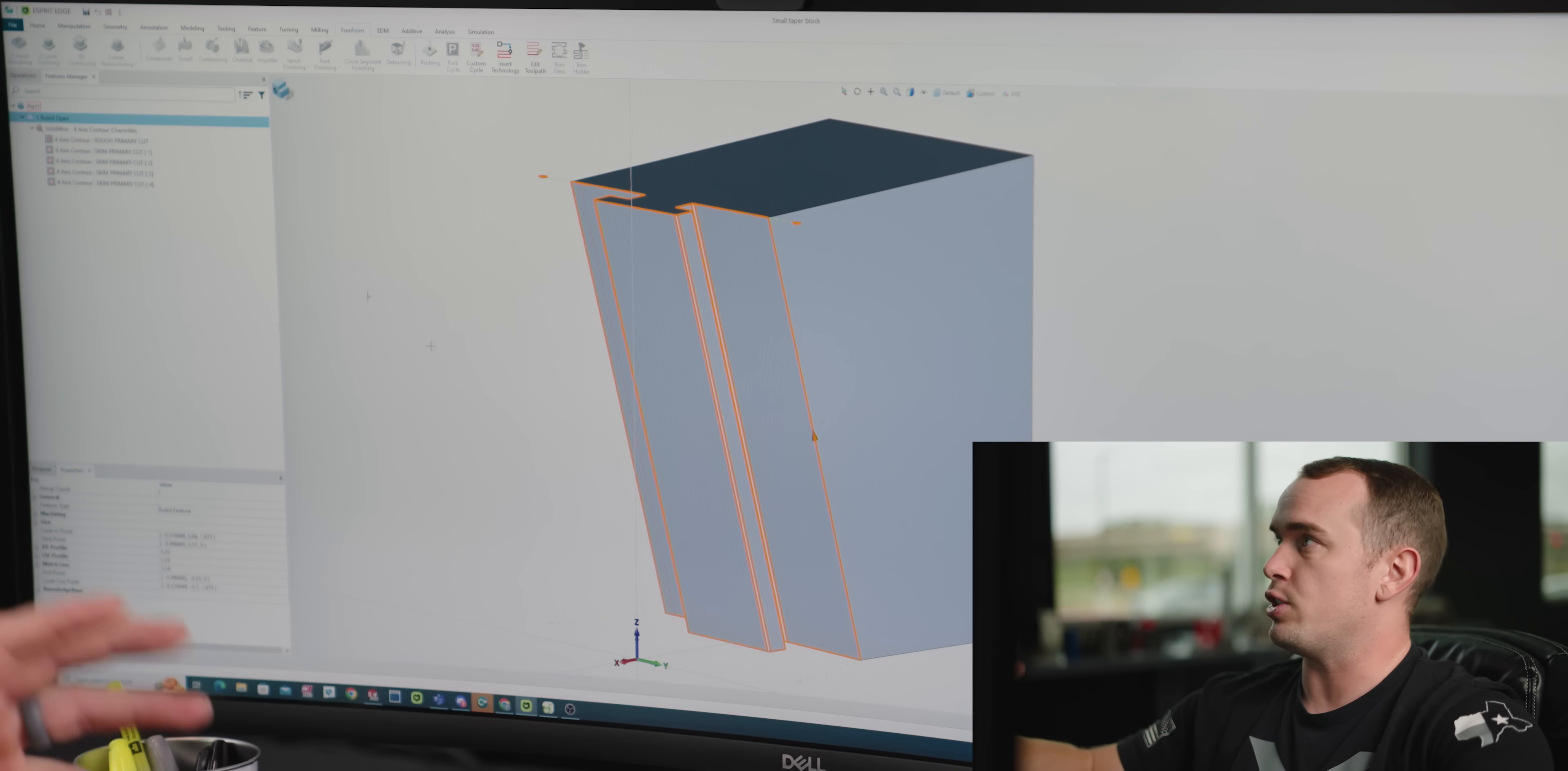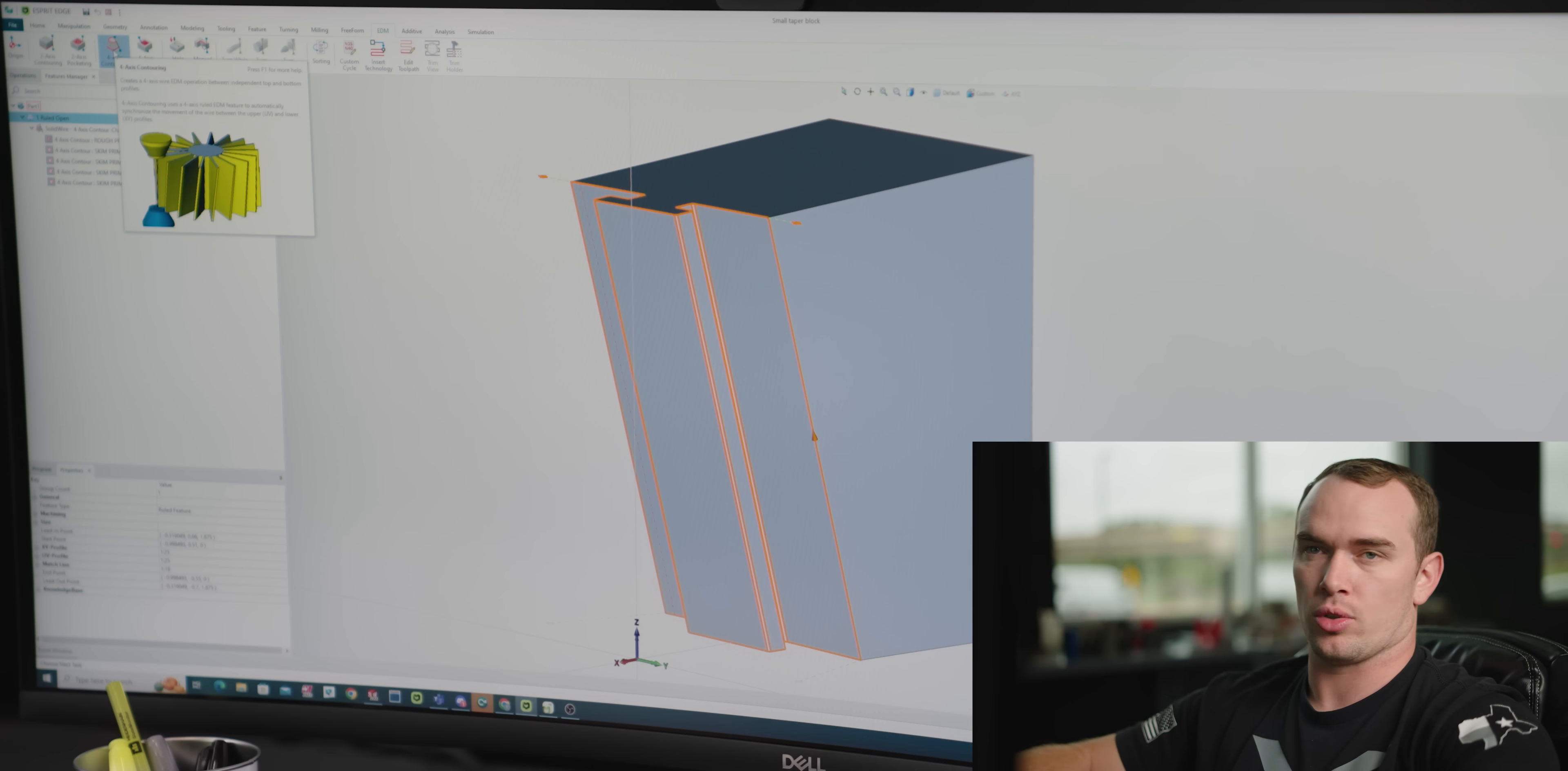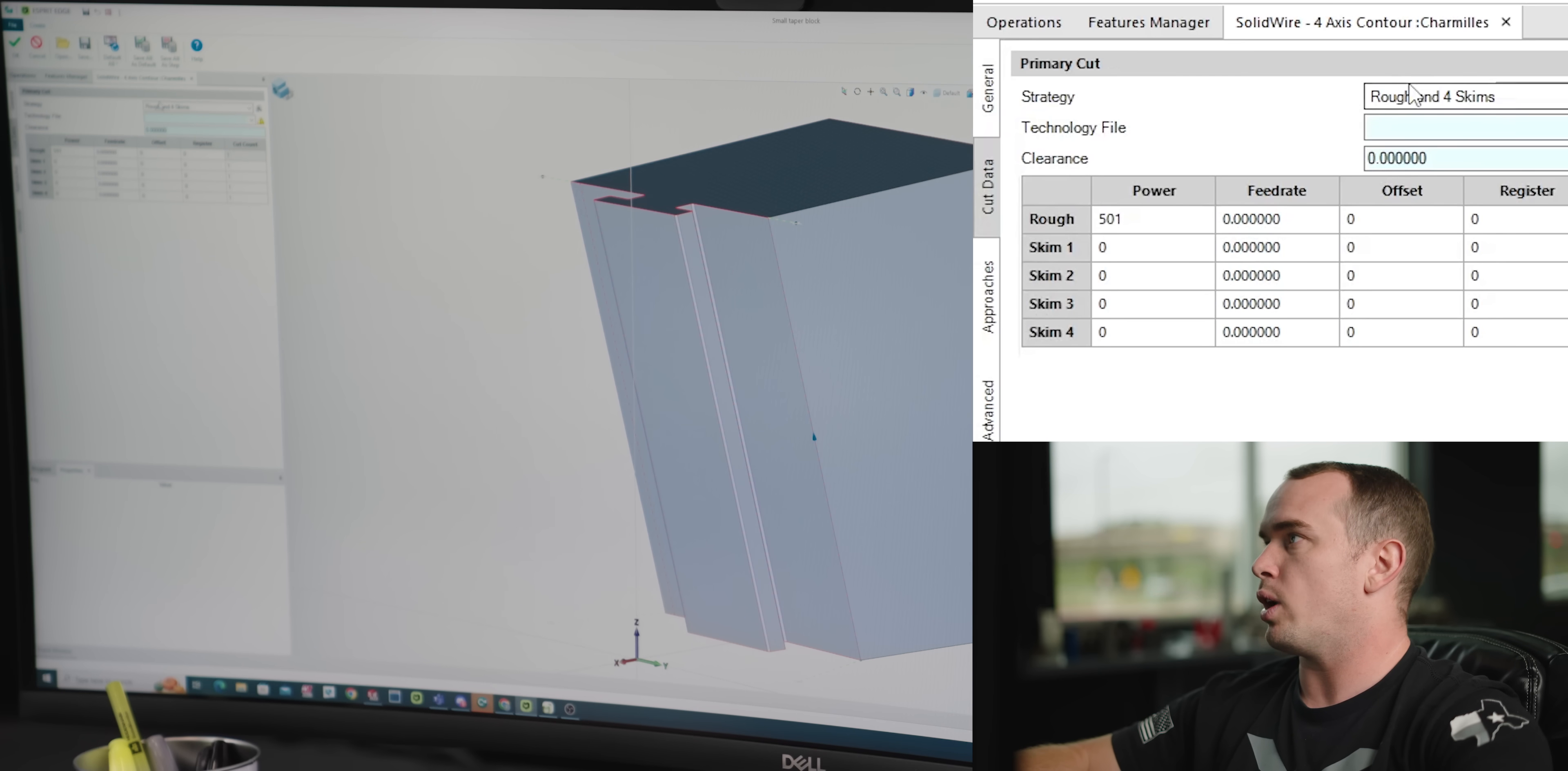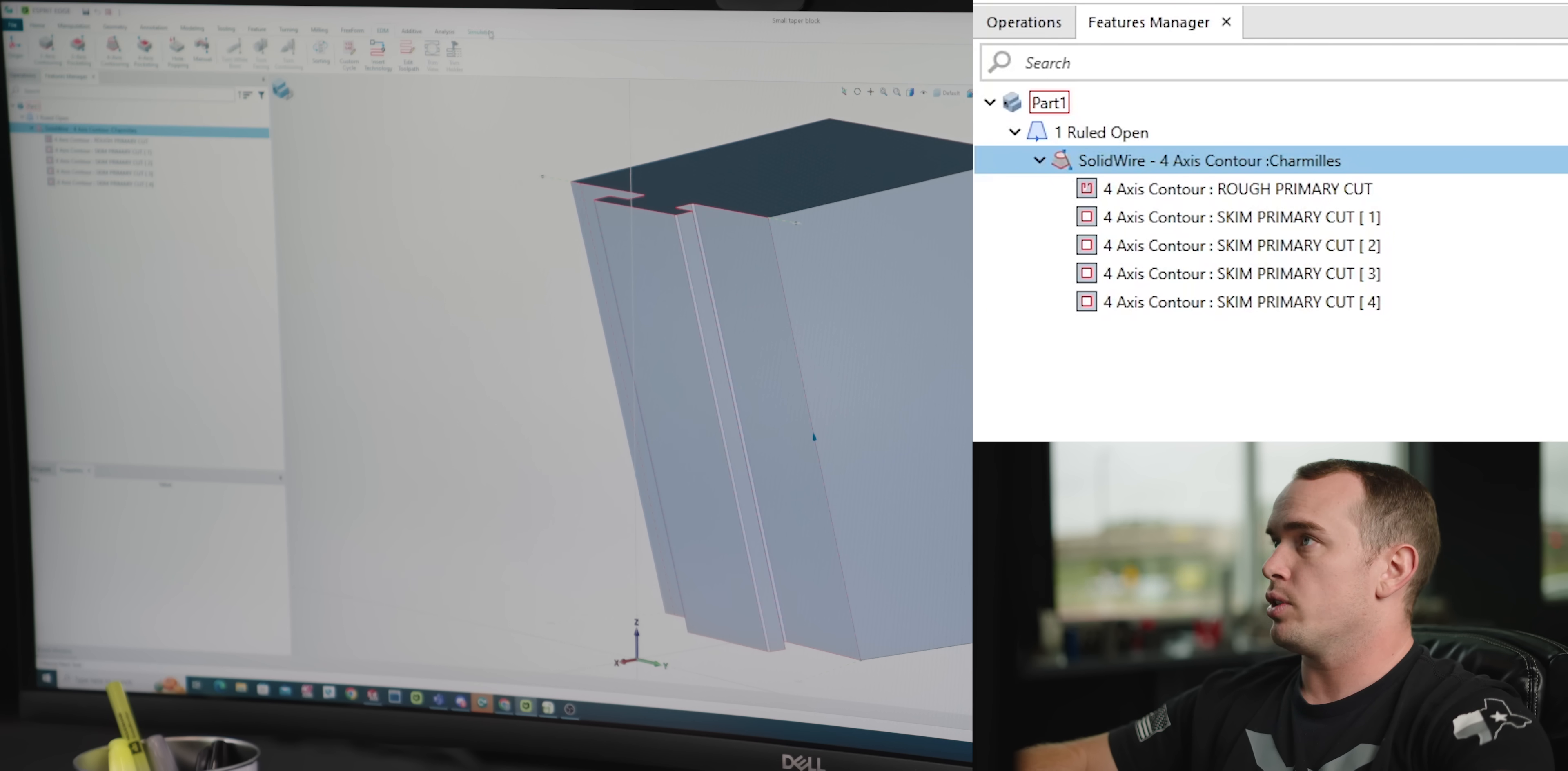In this case we created a ruled feature and then we came in here to four axis contouring. Once we did that all we have to do is fill out all of our values. We have our optional stop so that we can be there when the slug drops. We've got our rough and skim passes as well as our entry and exit values. Once you have all that it's really that simple.